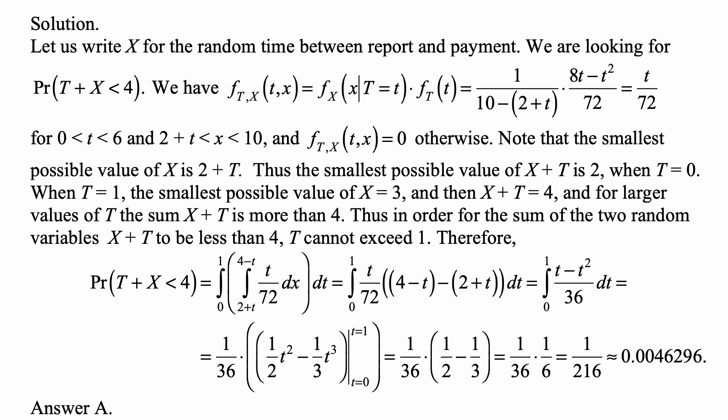But this is the first density, the density f_x(x) given that t equals a specific value of t. So again, with respect to x, this is a constant times the density of t, which is (8t - t²)/72.